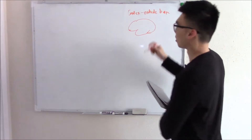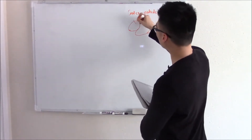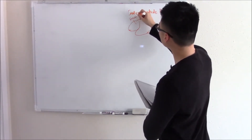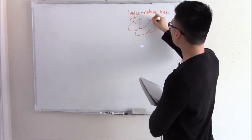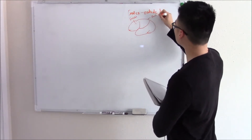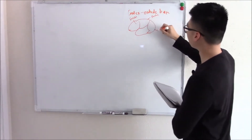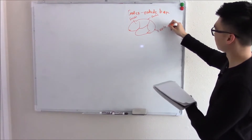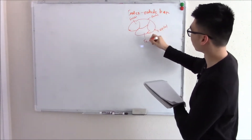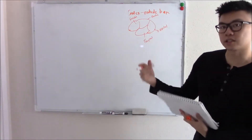The cortex is divided into four parts, or four lobes: your frontal lobe, your parietal, your occipital, and lastly your temporal. They all have different functions.